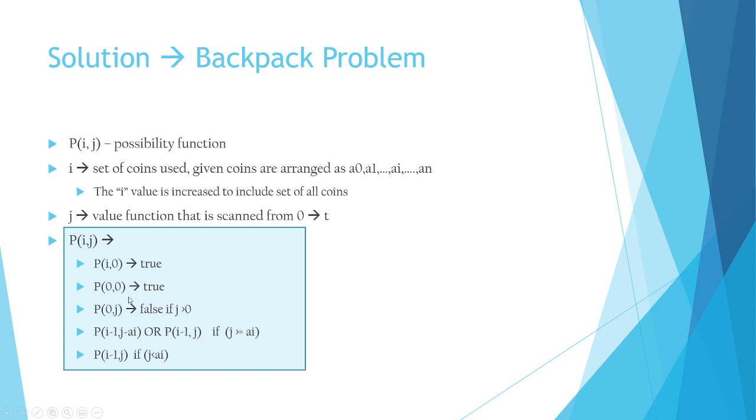P(0,0) is also true, but if you want to, with no coins, if you're trying to make any non-zero value—if target value is non-zero and you try to make it with null set of numbers, you cannot make it. It's false. So keep that in mind, these are the boundary conditions.